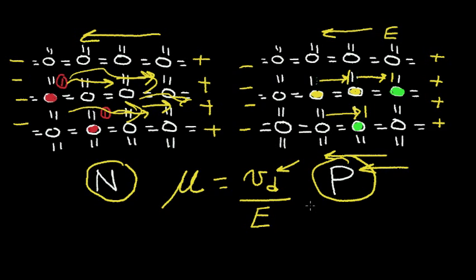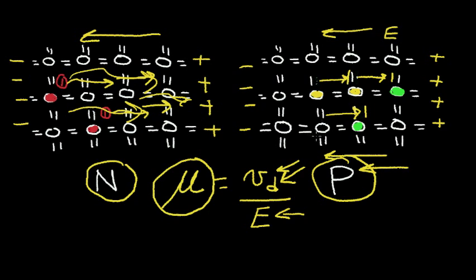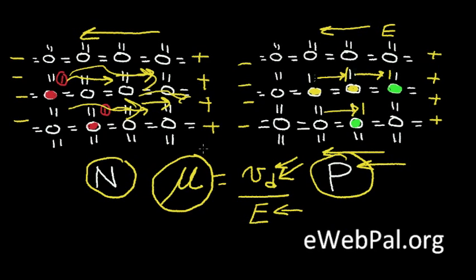And indeed, this is the case. If I have a very small electric field in the denominator and a very high drift velocity, then I have a very high mobility. So the N-type mobility is better than the P-type mobility — that is the correct result, and that has some consequences. Let's explore those consequences now: what is the consequence of the mobility of the electrons in the N-type material being greater than the mobility of the holes in the P-type material?